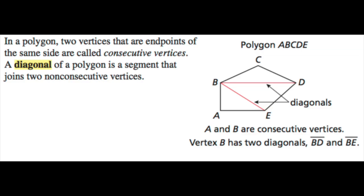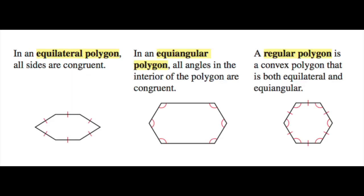A diagonal of a polygon is a segment that joins two non-consecutive vertices. In an equilateral polygon, all sides are congruent. In an equiangular polygon, all interior angles of the polygon are congruent. A regular polygon must be a convex polygon that is both equilateral and equiangular.